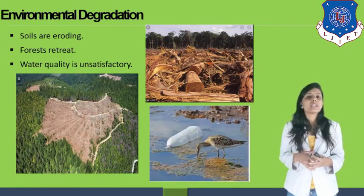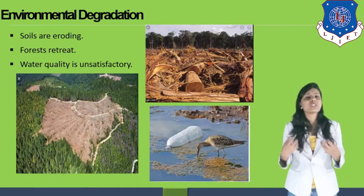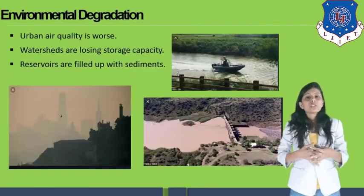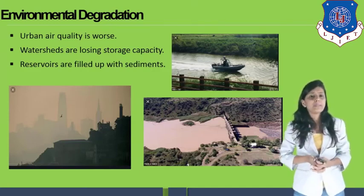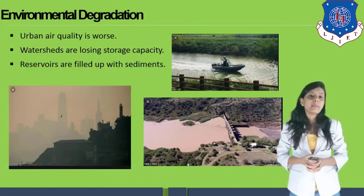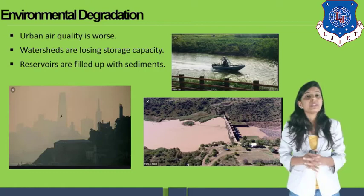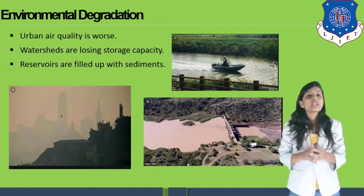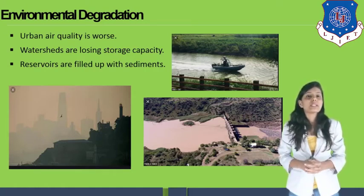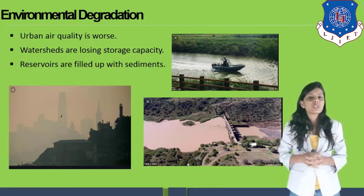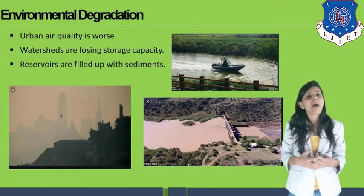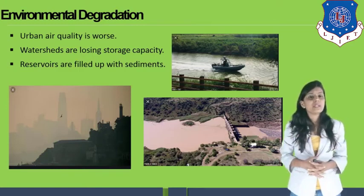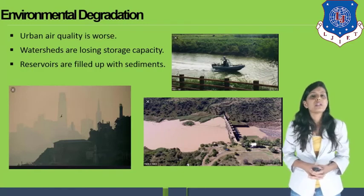You can see how water quality is unsatisfactory because we are throwing plastic into the water. Urban air quality is also worst. Take Delhi as an example, where the air quality index was lowering day by day because of pollution caused by people and industries. There was so much smog in the atmosphere that schools were closed. This poor air quality affects our lungs and our health very badly — that is how the environment is degrading day by day.